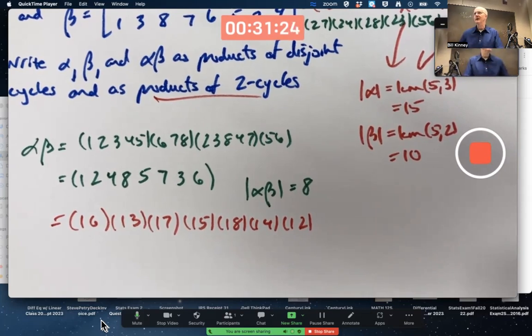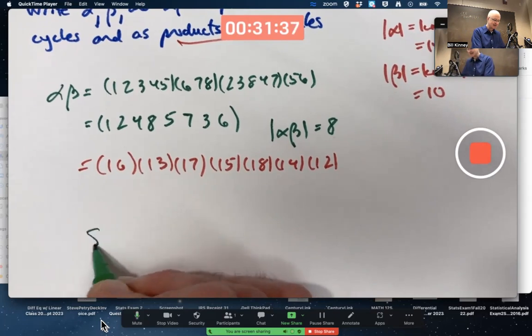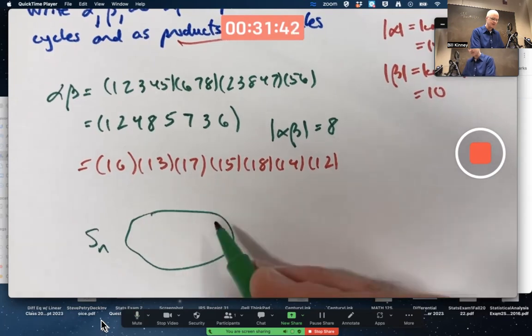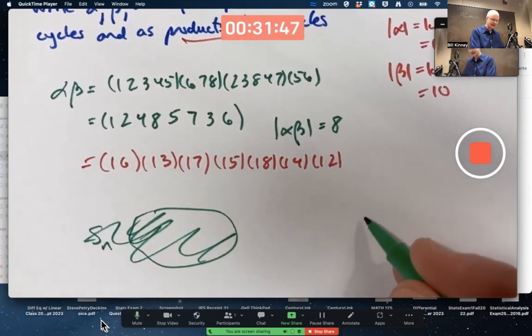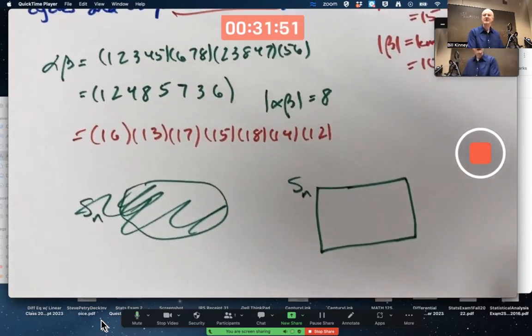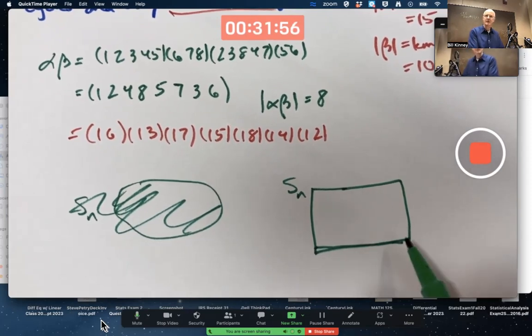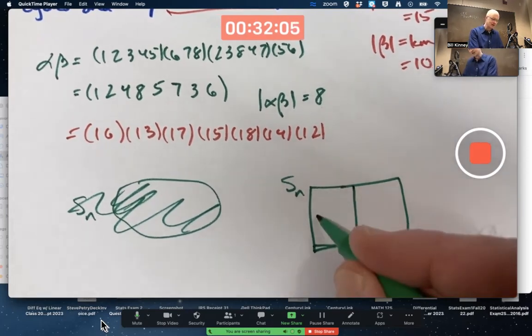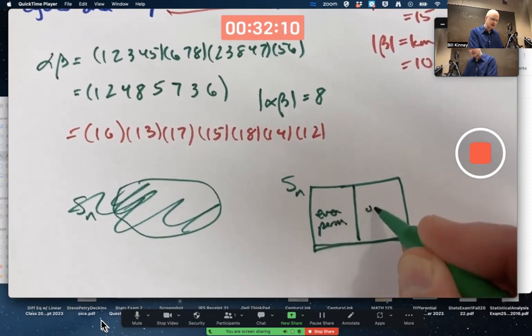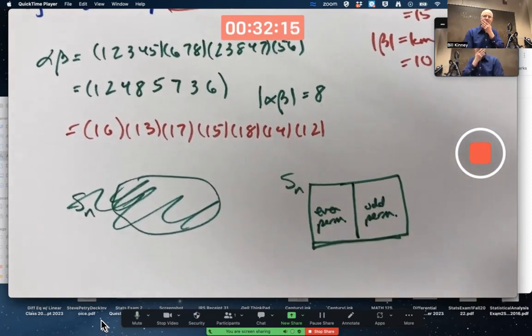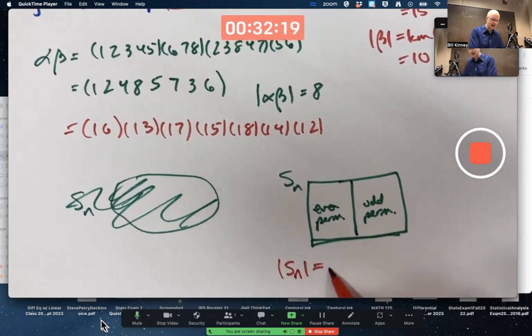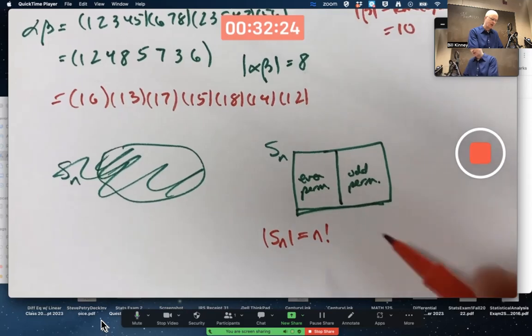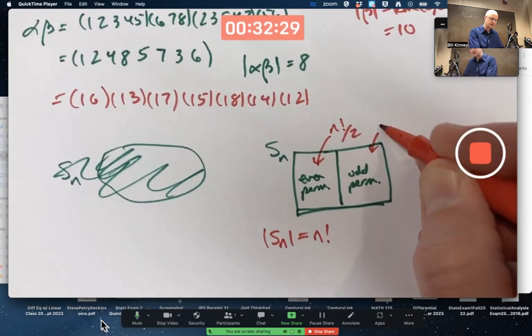Those permutations which can be written as an even number of two cycles are called even permutations. And those permutations that can be written as an odd number of two cycles are called odd permutations. And SN effectively is, if you imagine as a box, you imagine the symmetric group as being a box and you distribute the permutations in SN evenly, so to speak, in this box. Half of them will be on one side and half will be in the other. The evens over here, even permutations, and the odd permutations over here. And there'll be the same number of them. SN happens to have order N factorial. Therefore, the number of even permutations is N factorial over two, and the number of odd permutations is N factorial over two.